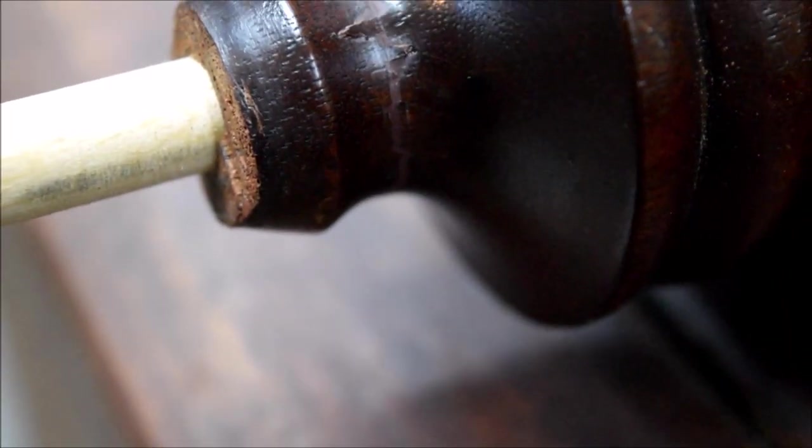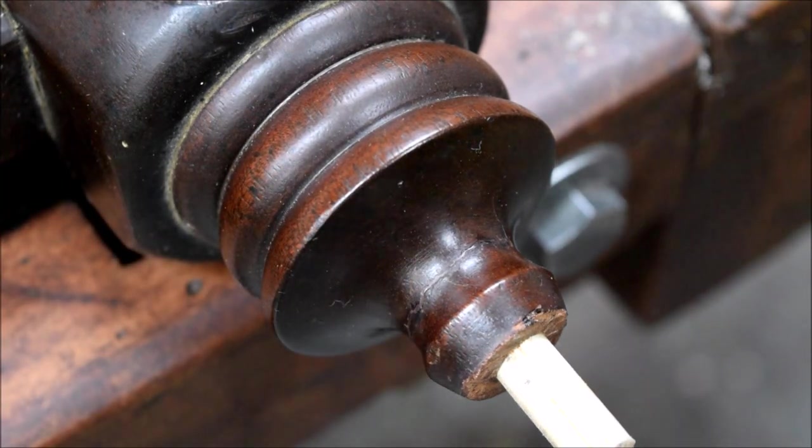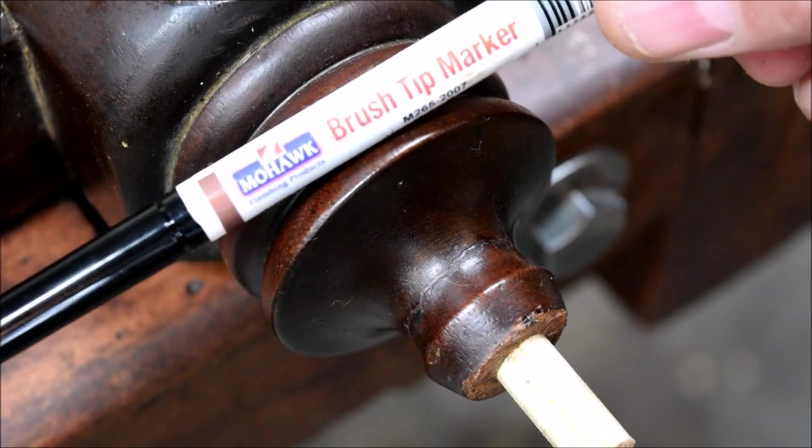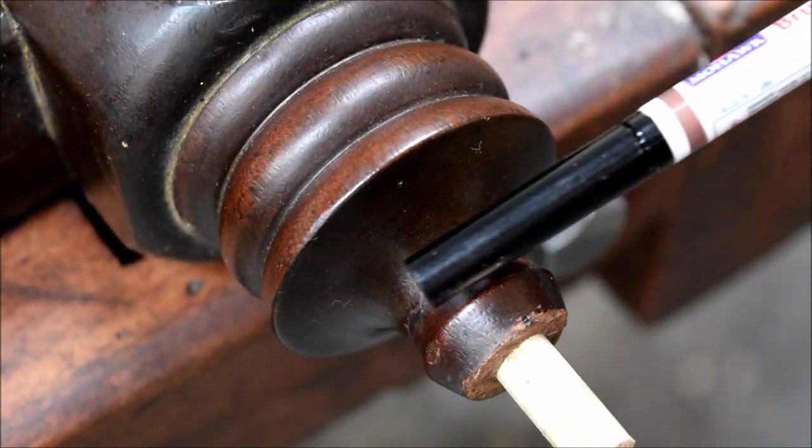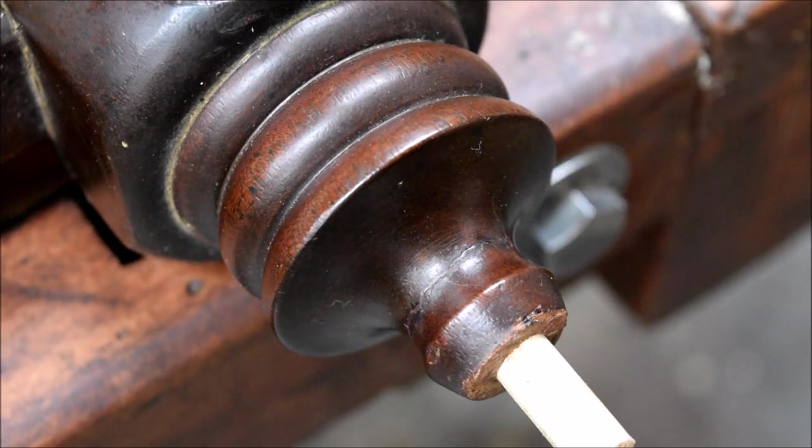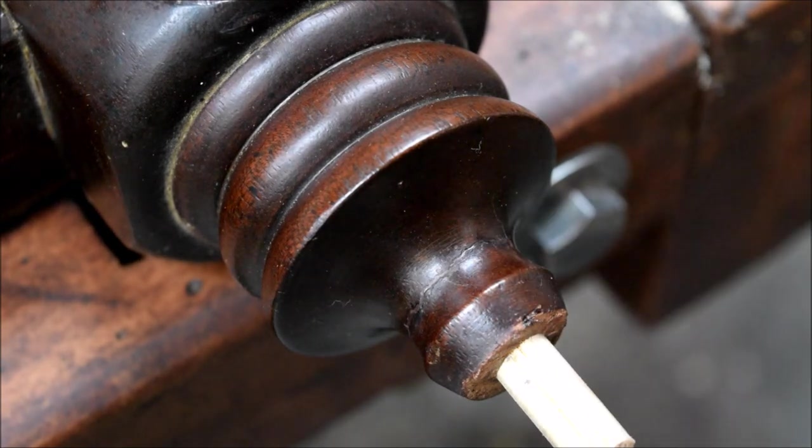And I hope you can see there, that's what that crack looks like, filled. And that's what it looks like with some color on it. And I just applied the color with this brush tip graining marker. And really, that's nearly invisible with you staring right at it. Once that ball's on there, it's going to completely disappear. So I'm real happy with the repair. I'm real happy with the structural fix we came up with.